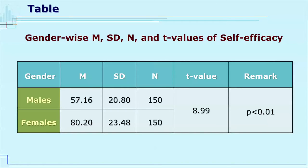From this table, it is evident that the t-value is 8.99, which is significant at the 0.01 level with df equal to 298. It indicates that the mean scores of self-efficacy of male and female teachers differ significantly. In this context, the null hypothesis that there is no significant difference in mean scores of self-efficacy of male and female teachers is rejected.